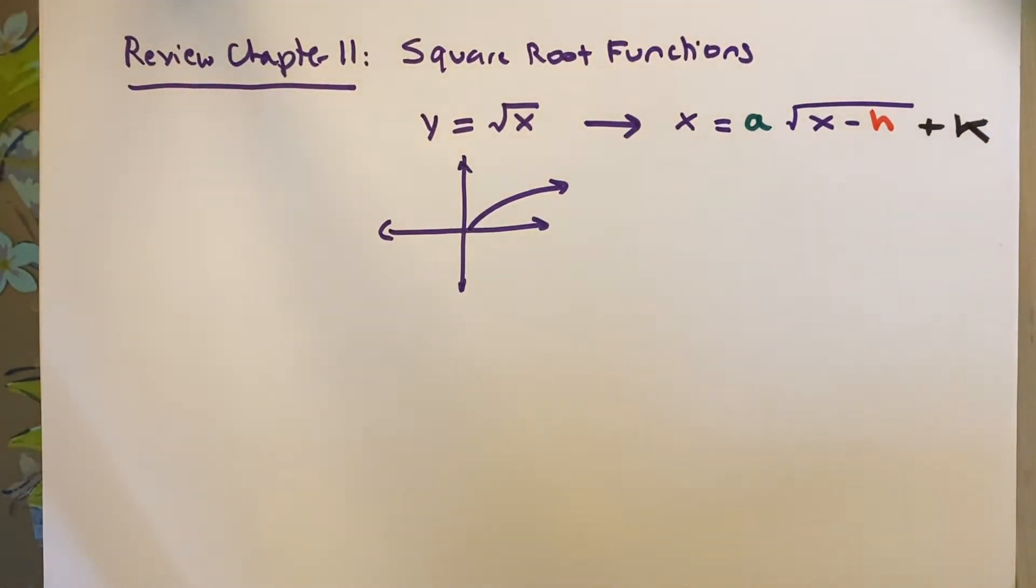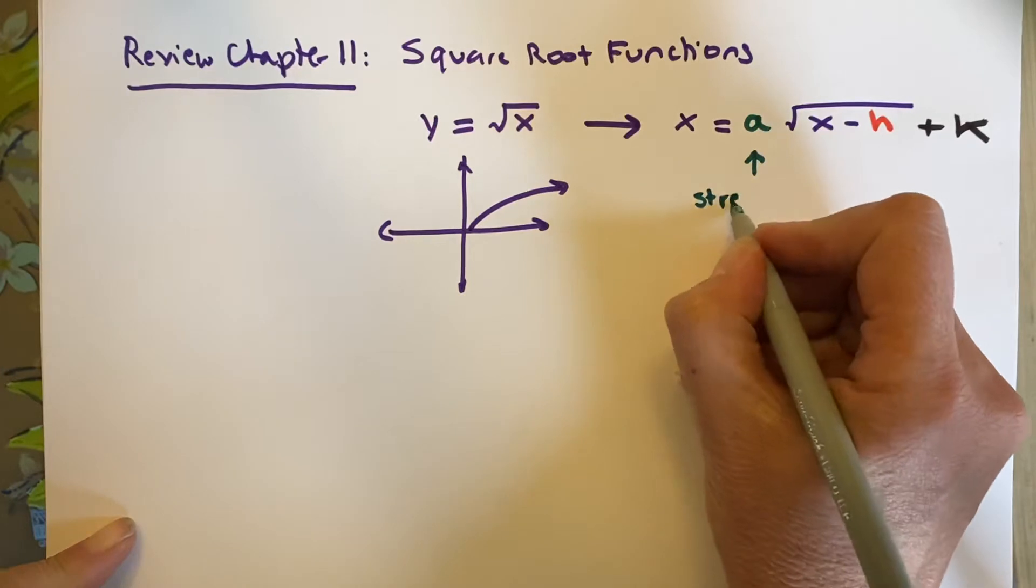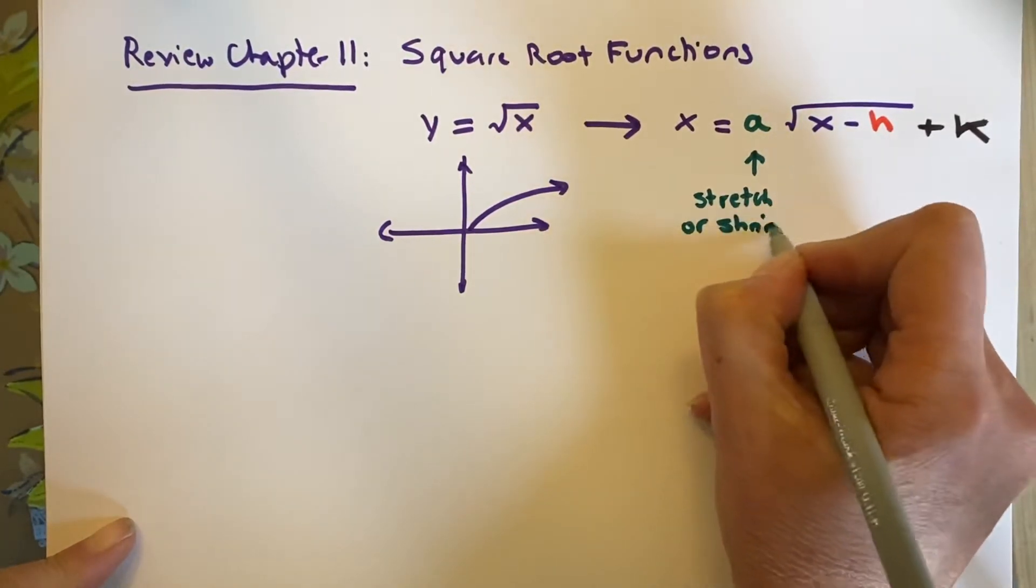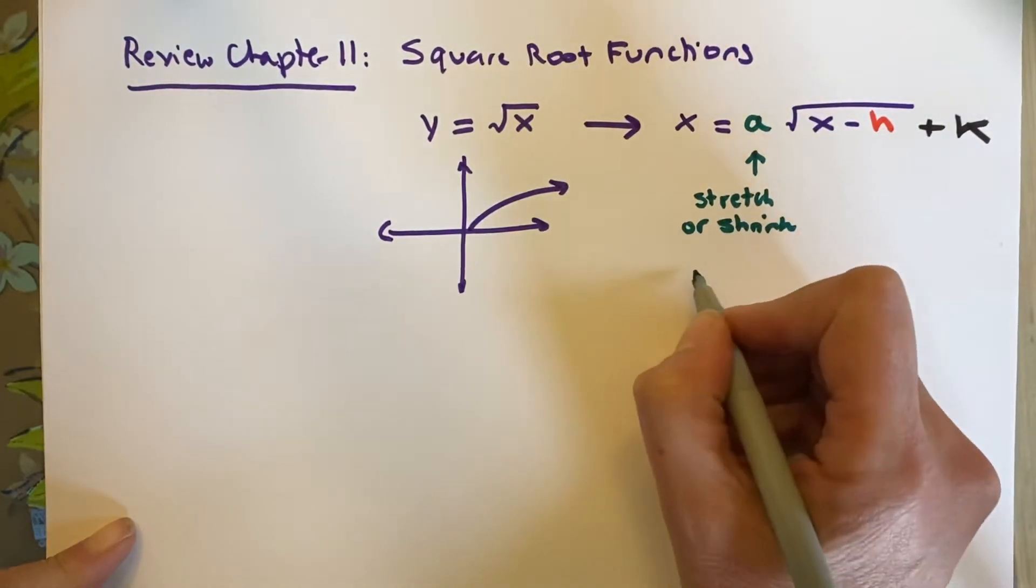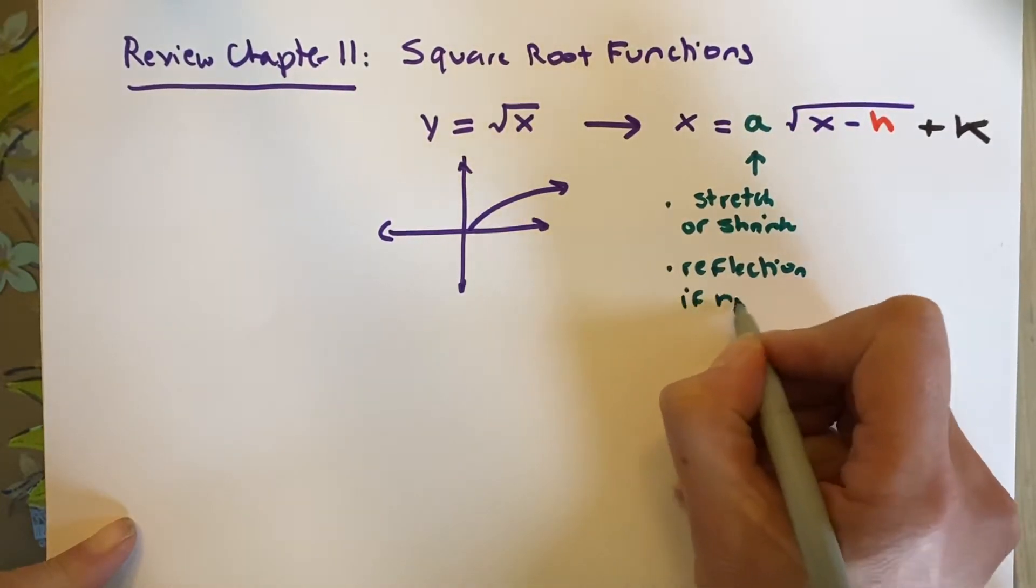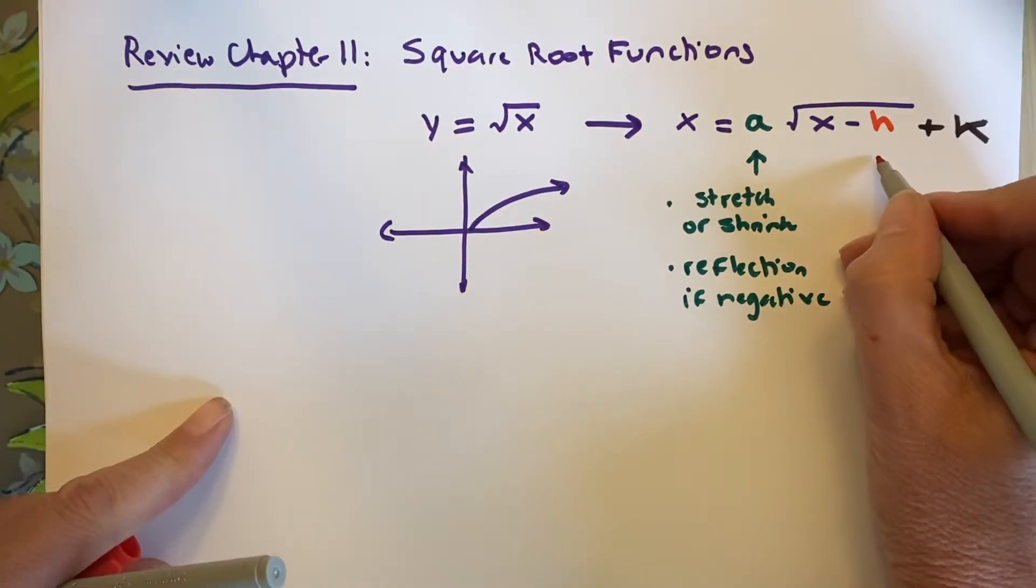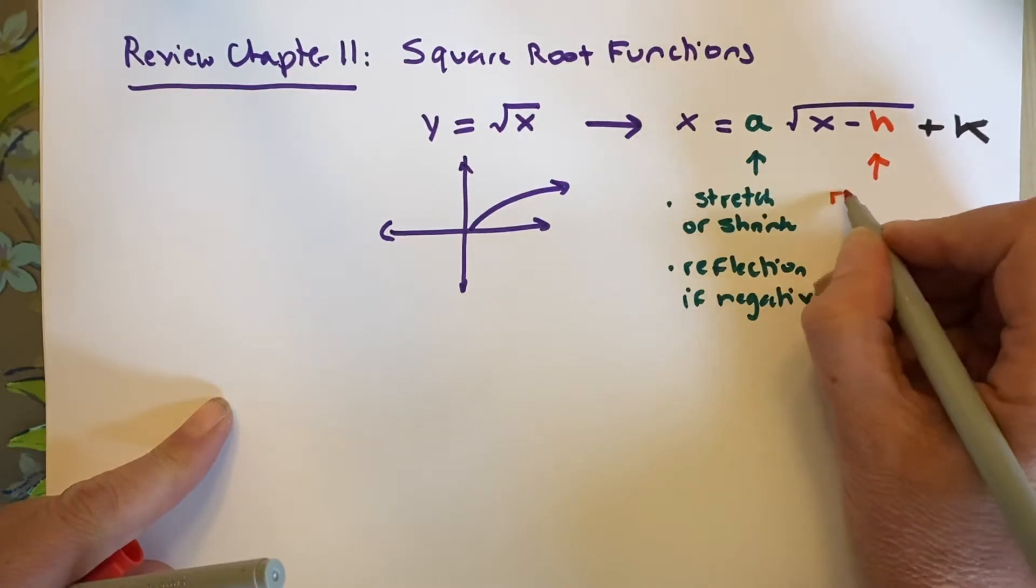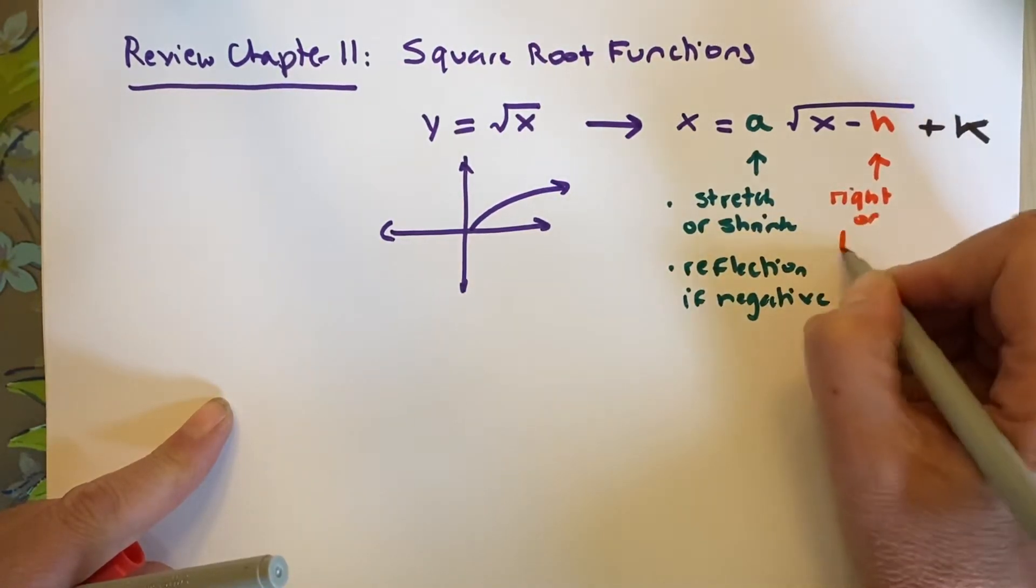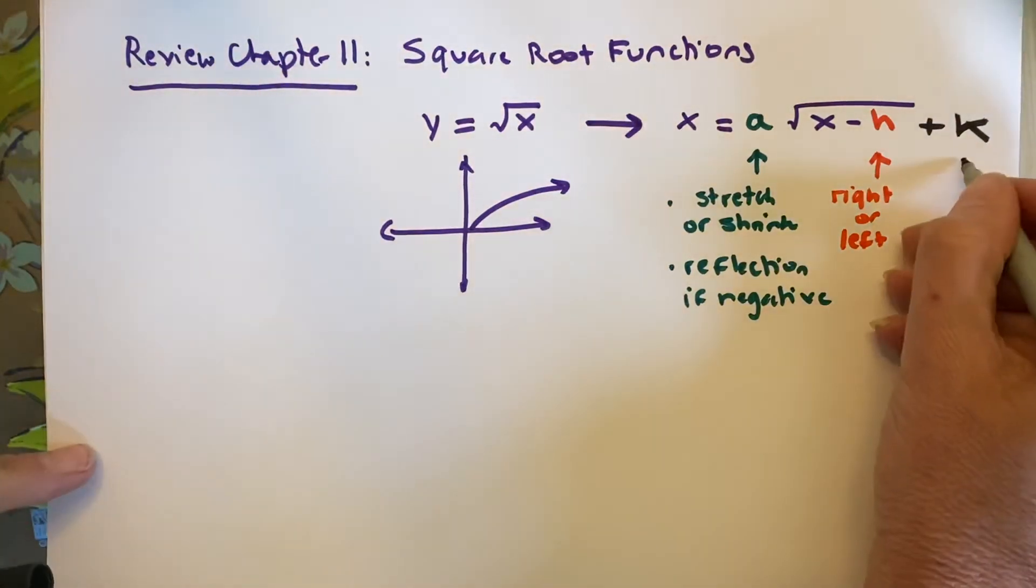Just to review, a means a stretch or a shrink. It also means a reflection if it's negative. h moves it right or left. And k is going to move it up or down.